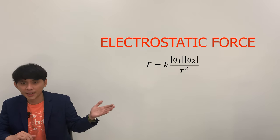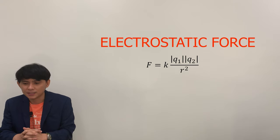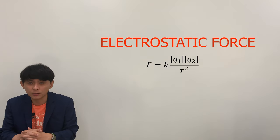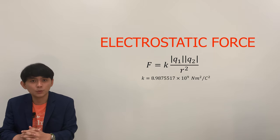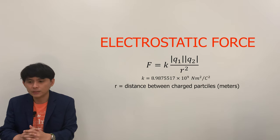The electrostatic force, which has a unit of Newton, is given by the equation F equals K times the absolute value of Q1 Q2 over r squared. Q1 and Q2 are the two charged particles, where K is equivalent to 8.987551787 times 10 to the 9 Newton meters squared per coulomb squared. That is the Coulomb's Law constant, and r is the distance between two charged particles in meters.